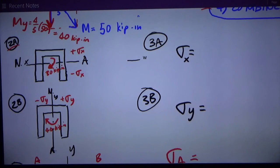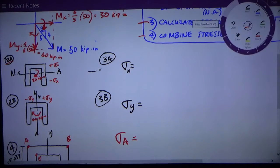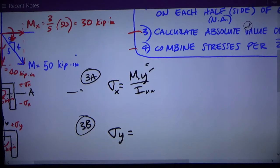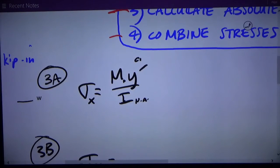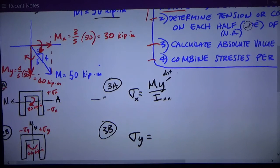I can move on to step 3, which is calculating the absolute value of those stresses. The formula for this is that sigma is My over I, where M is the moment, y is the distance to the neutral axis, and I is the moment of inertia about the neutral axis. So the only thing that's going to vary in these things is y, the distance to the neutral axis.